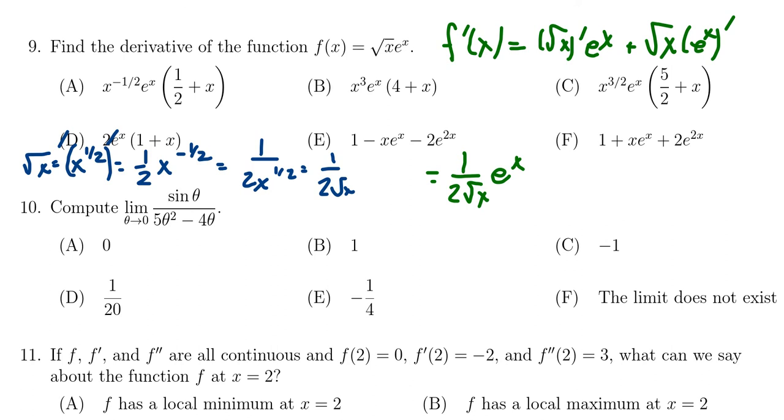So continuing on, we get one over two times the square root of x times e to the x. That's in the numerator. And then we're going to get the square root of x times the derivative of e to the x, which is itself e to the x.